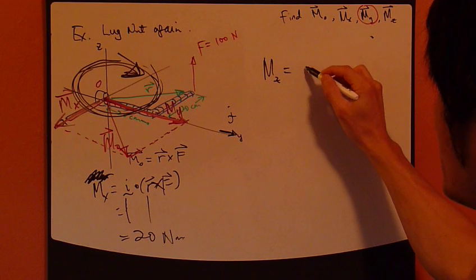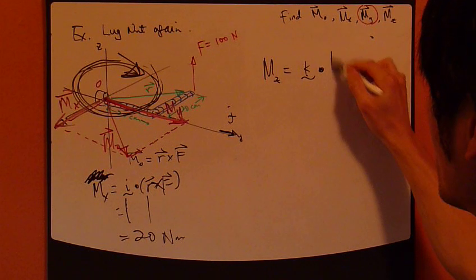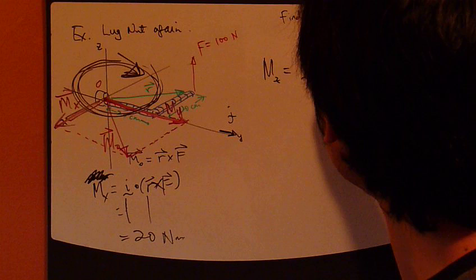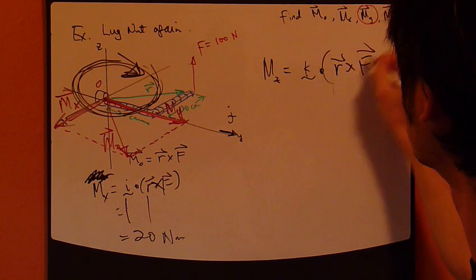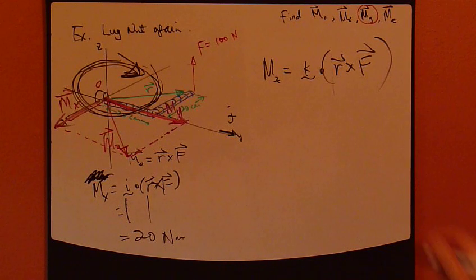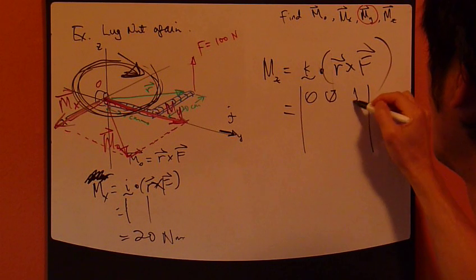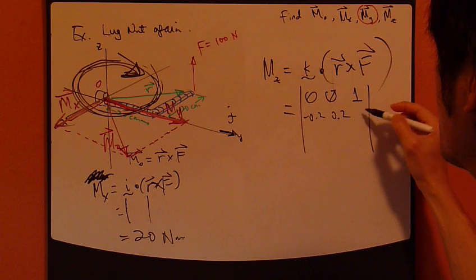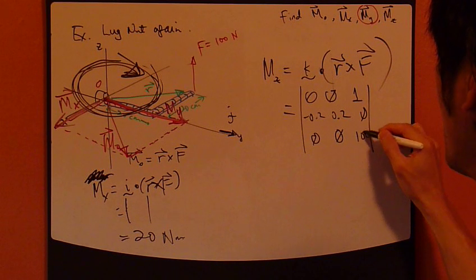M_z equals, using the vector formulation. K vector. Dot it with r cross f. Alright? Okay. So, k vector is 0, 0, 1. Alright? So, this is 0.2, 0.2, 0. And, f is 0, 0, 100.